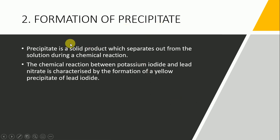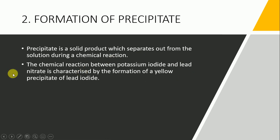Formation of precipitate. A precipitate is a solid product which separates out from the solution during a chemical reaction. The chemical reaction between potassium iodide and lead nitrate is characterized by the formation of a yellow precipitate of lead iodide.